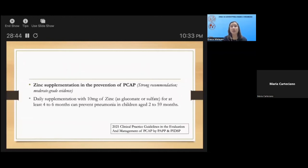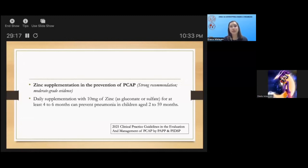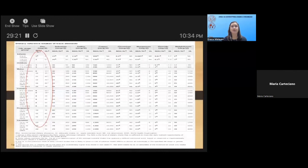Contrary to the inter-society consensus, the 2021 PICUP update stated that zinc supplementation has a role in the prevention of pediatric community-acquired pneumonia. A daily supplementation of 10 milligrams of zinc as a gluconate or sulfate form for at least four to six months can prevent pneumonia in children age two to 59 months, again in low socioeconomic status and clearly insufficient levels of zinc, like the Filipino children. I think zinc is very much recommended.